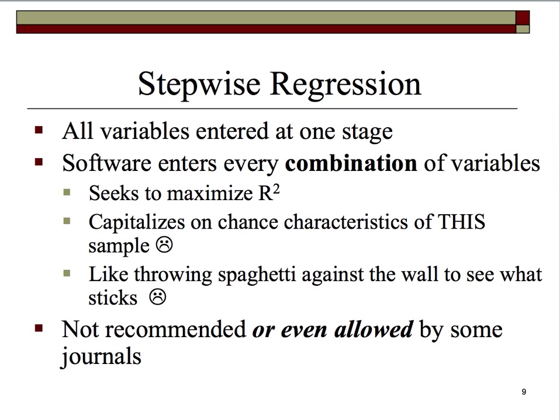For example, the software may find the strongest bivariate relationship between a list of X1, X2, X3, X4, X5, and X6 in the prediction of Y. Let's say the strongest relationship is X1 — it'll enter that one, and then it will enter X2 by itself to see if there's a significant change, then X3, X4, X5, and X6 separately.